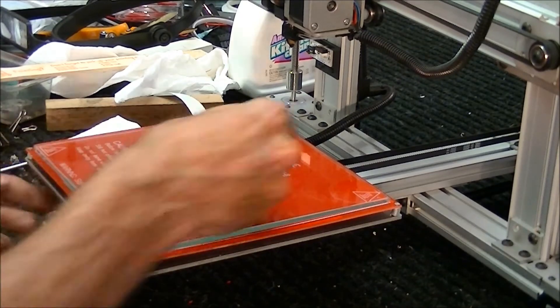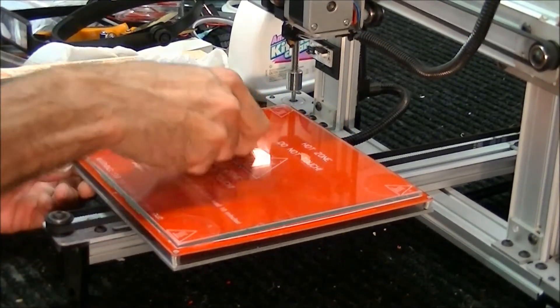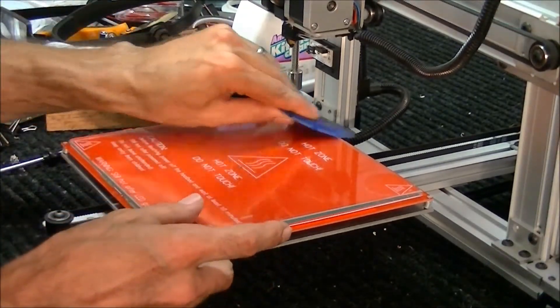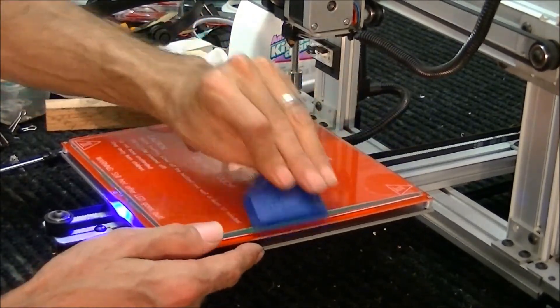Now I'm going to take the squeegee again from the center and squeegee that all out. Make sure there's no air pockets and all those edges are stuck down really well.